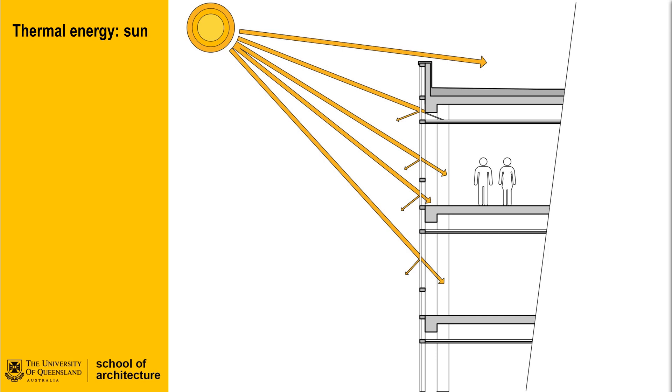Understanding the path of the sun on a daily and seasonal cycle is critical in managing the effects of solar heat gain for good and bad.